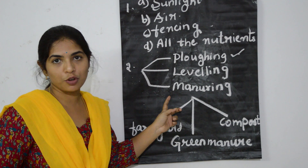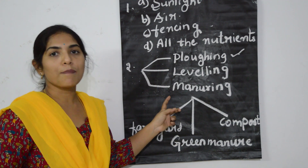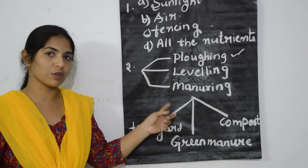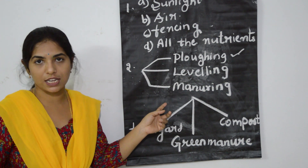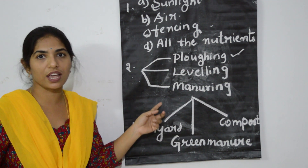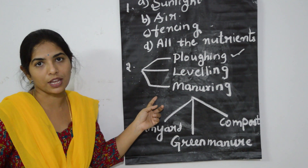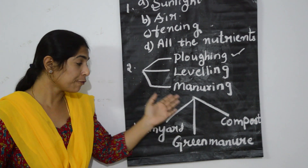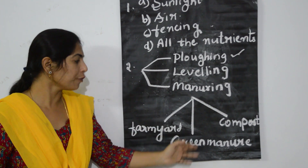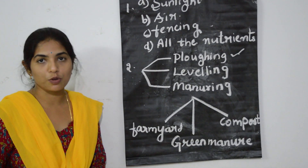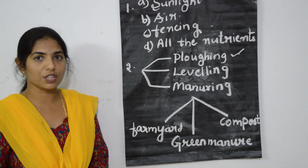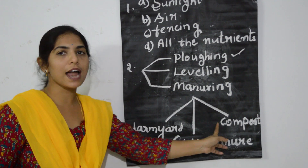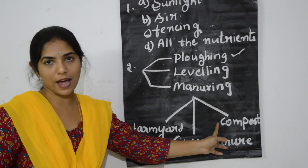The third step in soil preparation is manuring. Manuring is nothing but giving manure or nutrients to the field or to the soil. The different types of manures used are farmyard manure, green manure and compost manure.